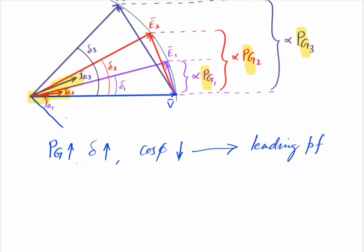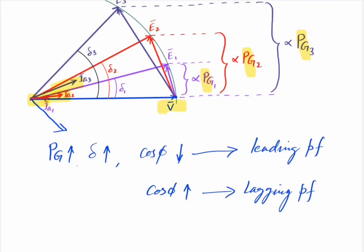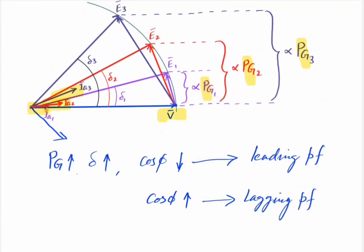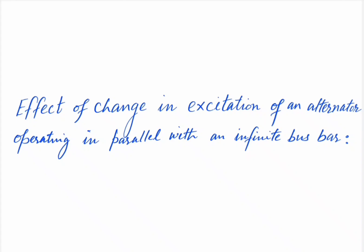For the lagging power factor case, that is when Ia lags the terminal voltage V, the power factor cos φ increases with increasing mechanical input. Once the active power output of the alternator is adjusted to the desired value, the corresponding governor set point is fixed. Now, after fixing the governor set point at the desired active power output, we will study the effect of changing excitation, keeping the active power output at that desired value.